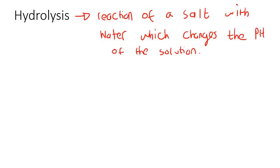So it's the reaction of a salt. Where do we get a salt from? Well, when you react an acid and a base, one of the products is always a salt. Acid plus a metal hydroxide gives you a salt and water. Acid plus a metal carbonate gives you a salt, water, and carbon dioxide. There was always a salt — so that's where the salt comes from. Now that salt sometimes will actually react with water, and that's what we're going to look at.